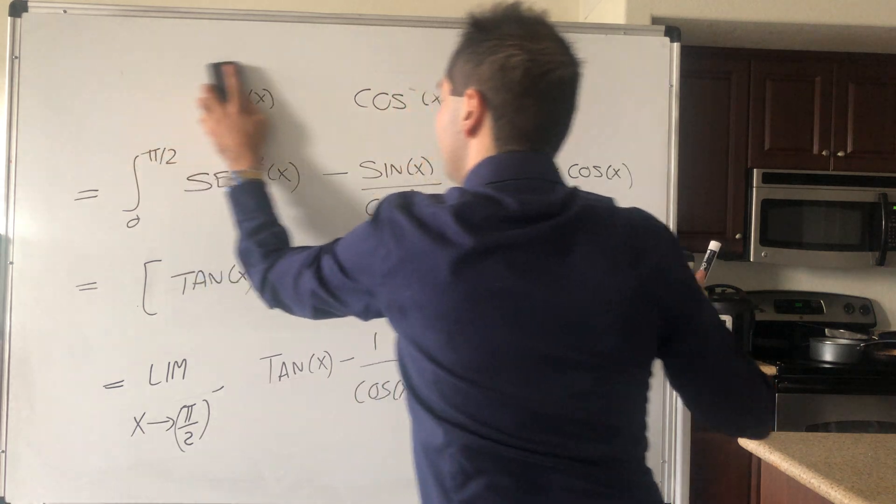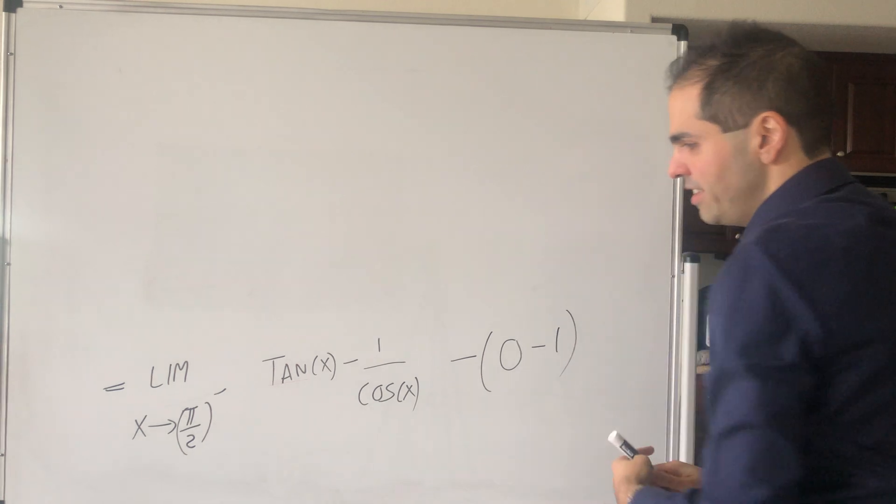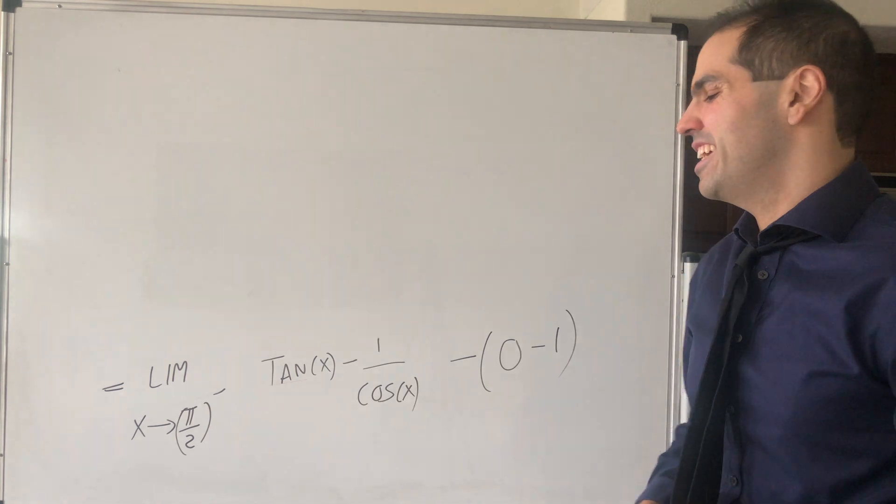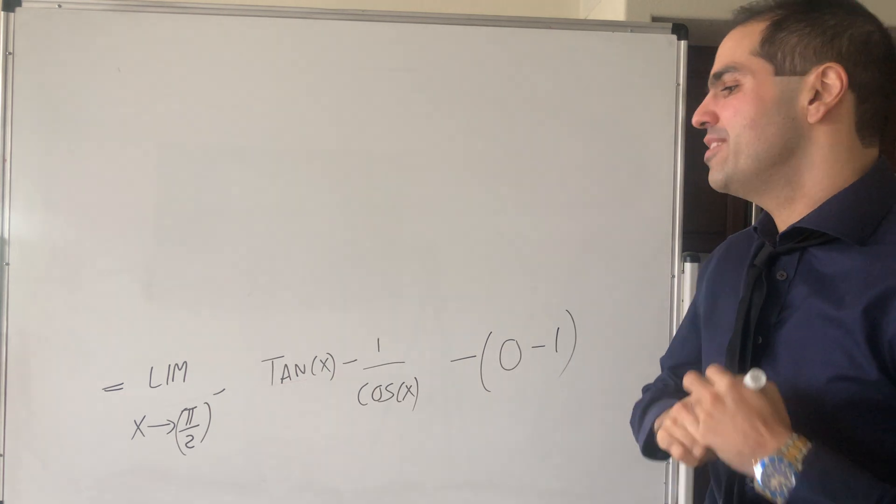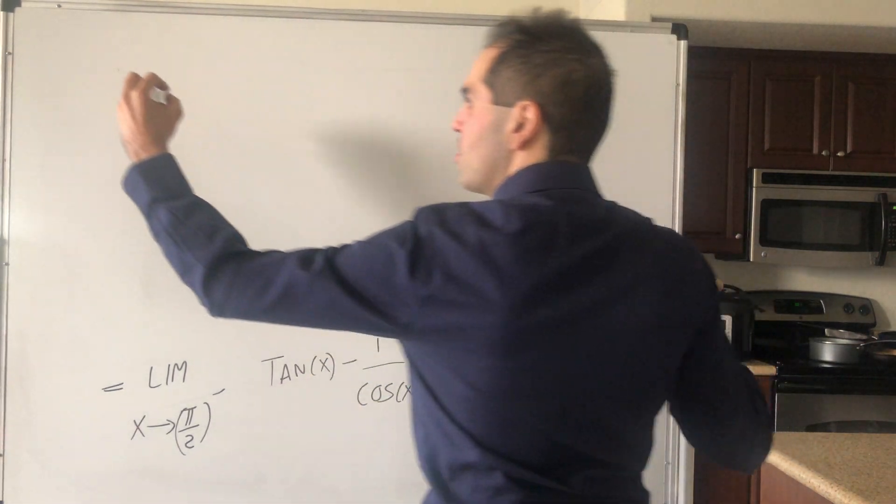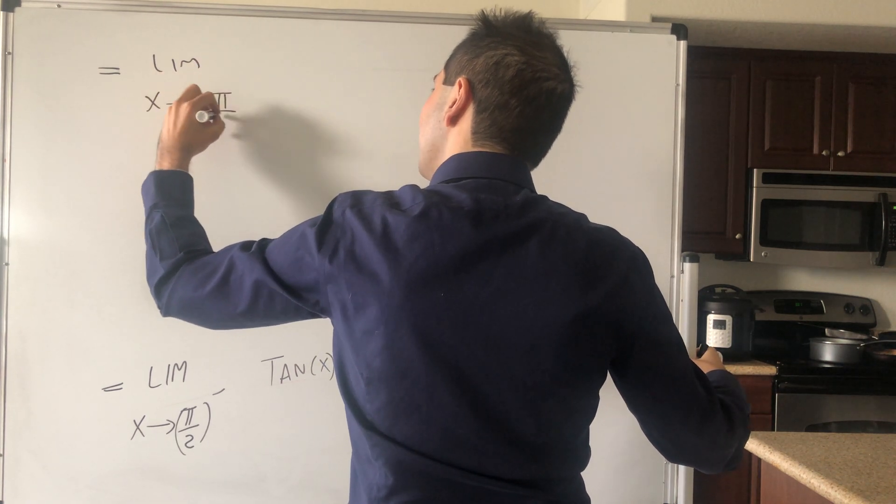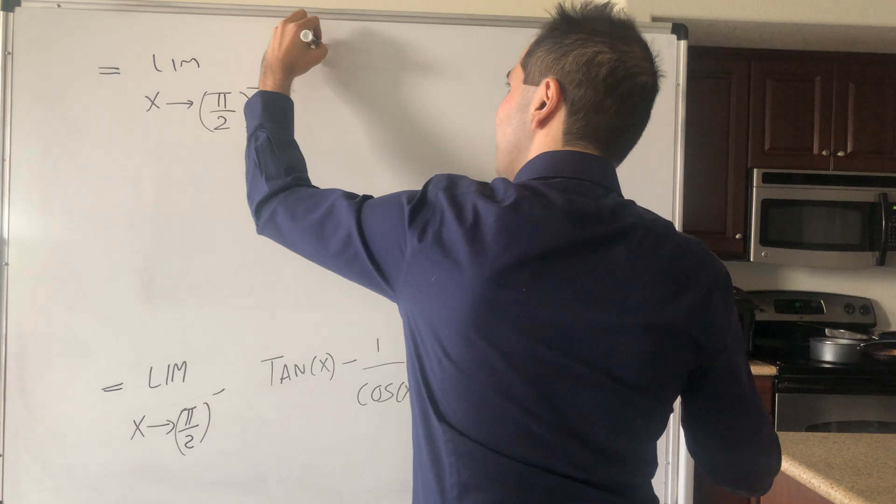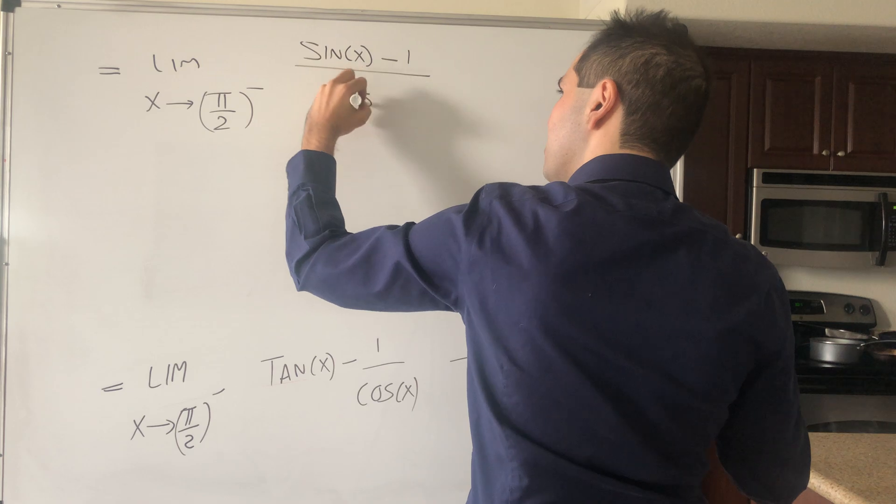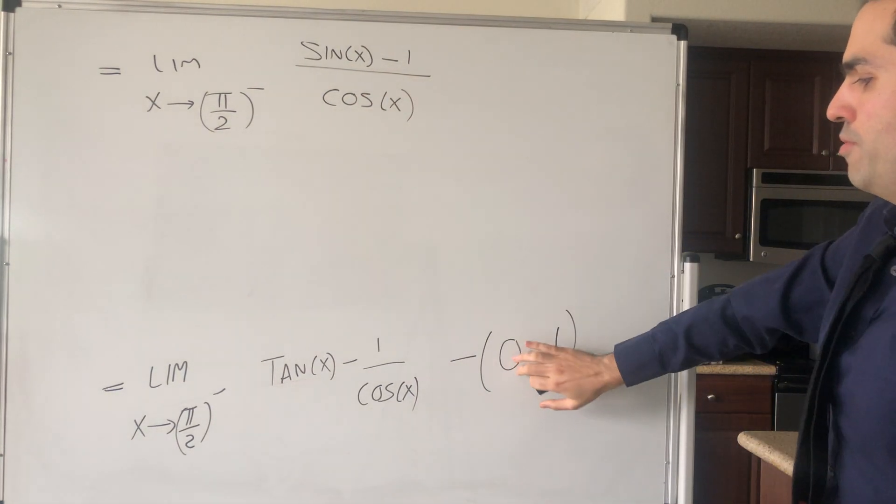And then, let's see. So again, ideally, you know, it would be nice to just plug this in, but we have to be careful, because it is infinity minus infinity. So what we need to do, we need to write tangent as sine over cosine. So this is the limit as x goes to pi over 2 minus of, I guess, sine of x minus 1 over cosine of x. But then, and again, remember this plus 1?